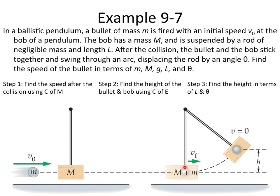The bullet and the bob, as indicated by lowercase m and capital M, now have momentum together. Because the bullet had momentum — mass and velocity — it was striking this unmoving bob. Now they're both moving together and have kinetic energy, in which case they rise up to a certain point and gain potential energy due to gravity. They go up and stop moving, and at that height is the potential energy due to gravity. What we're going to find is the initial velocity of the bullet, describing it in general terms without specific values.